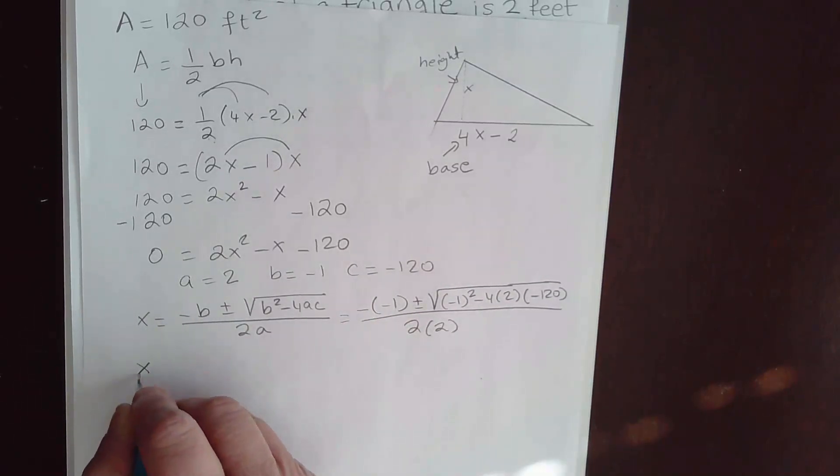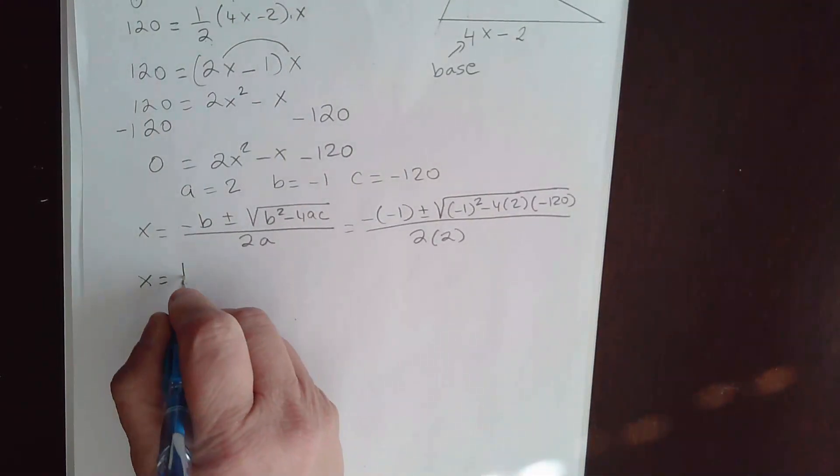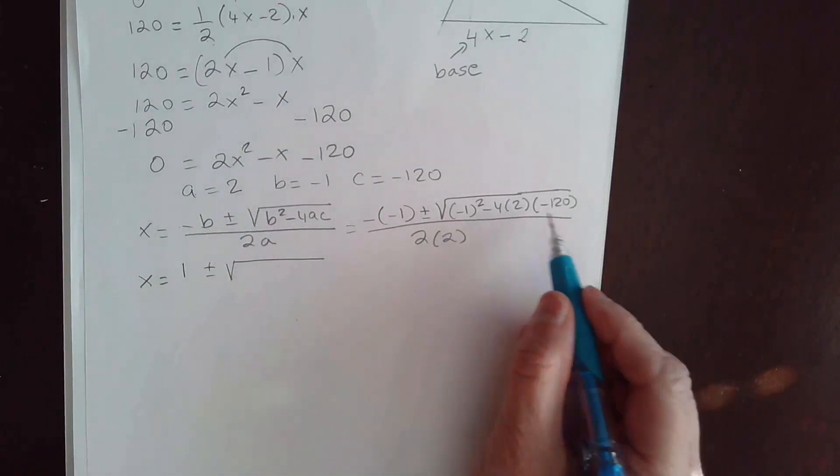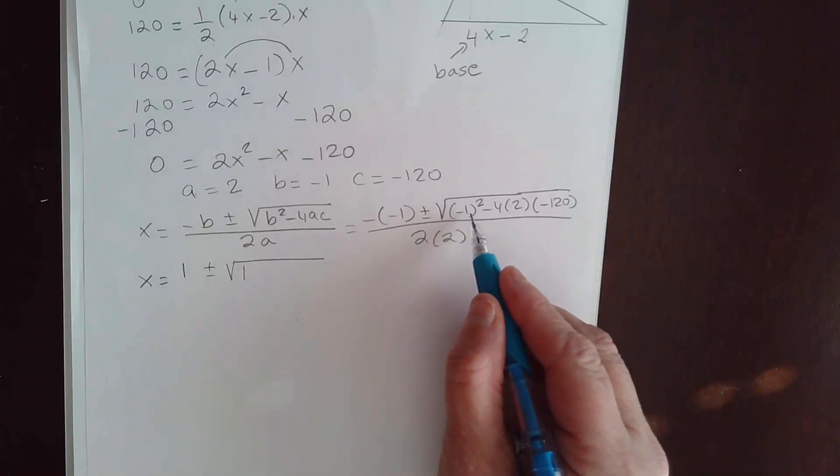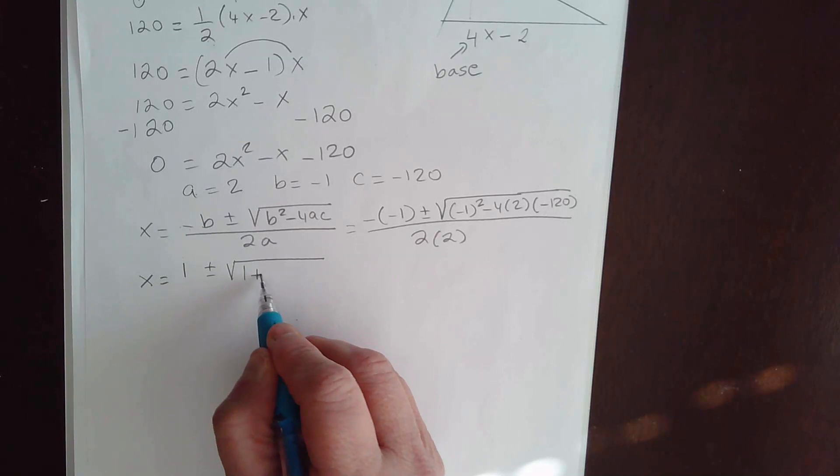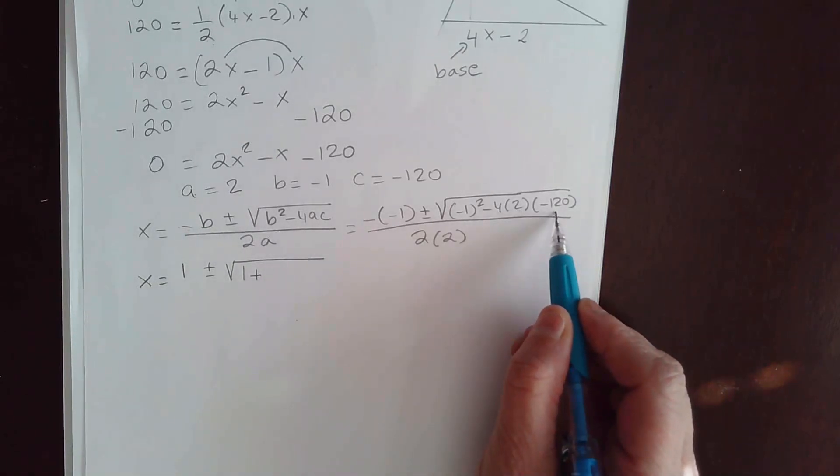So let's simplify this. Negative times a negative. That gives me positive 1 plus or minus. You're going to have to use your calculator here in a bit. Negative 1 squared is 1. And so negative 1 squared is 1. You have negative times a negative. That's going to give me a positive.